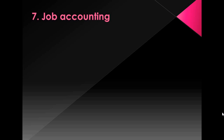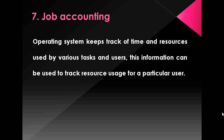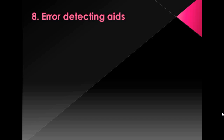The next function is control over system performance — the operating system supervises overall system working to help improve performance. The next function is job accounting: the operating system keeps track of time and resources used by various tasks and users. This information can be used to track resource usage for a particular user. If we are using paid services from servers, the server's operating system keeps track of which user is using which resources for how long, and that determines the payment.